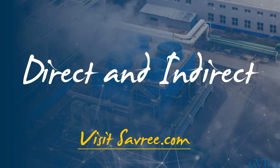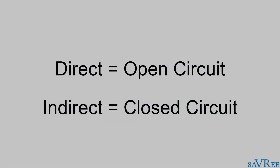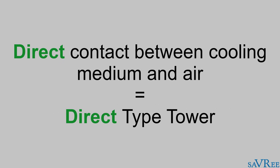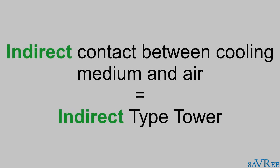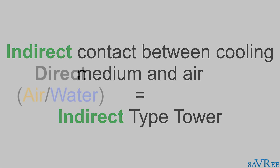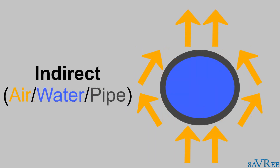Direct and indirect cooling towers are also known as open circuit and closed circuit cooling towers, respectively. If the cooling medium comes into direct contact with the process medium, the tower is a direct type cooling tower. If the cooling medium does not come into direct contact with the process medium, it is an indirect type cooling tower. For example, water being cooled by air is cooled directly — the water comes into direct contact with the air. But water in a pipe that is cooled by air is not cooled directly; the air cools the metal pipe, and the metal pipe then absorbs more heat from the water, which is then cooled by the air. Thus, the water is cooled indirectly, and this is an indirect type cooling tower.